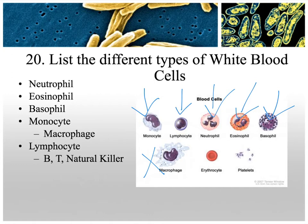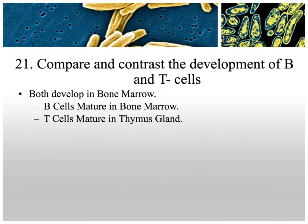Comparing B cells and T cells: both develop in the bone marrow. B cells stay in the bone marrow and mature there, gaining their specific paratope — their immunocompetence. T cells migrate out of the bone marrow to the thymus gland above your heart, where they gain their immunocompetence.